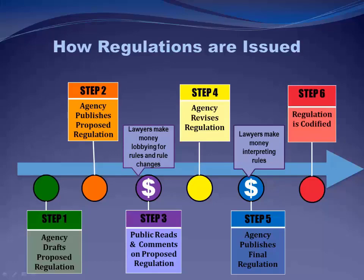Step four, the agency reviews the comments received and may revise the rule. In the preamble of a final rule, they discuss the comments they received, how they thought about them, and whether they incorporated them. Step five, the agency publishes the final rule in the Federal Register. Step six, the rule is codified and assigned to its appropriate subject title in the Code of Federal Regulations — mirroring how statutes at large are arranged into the United States Code.